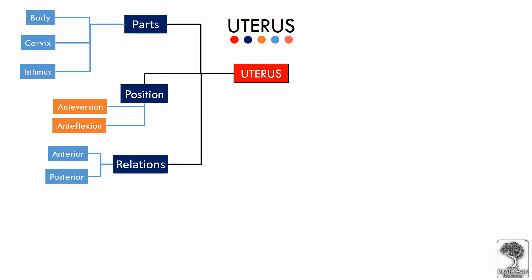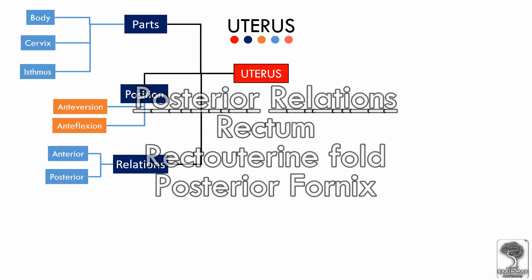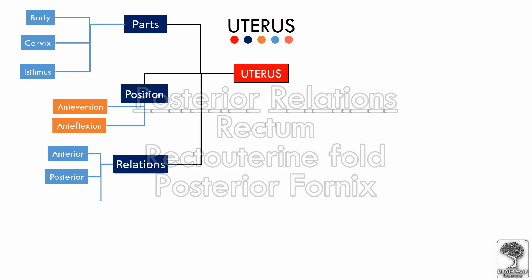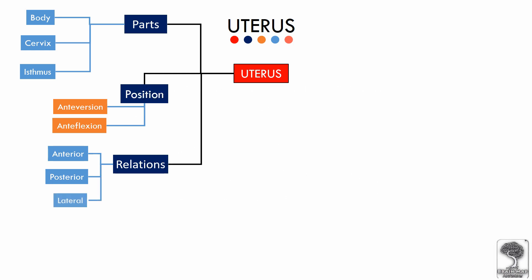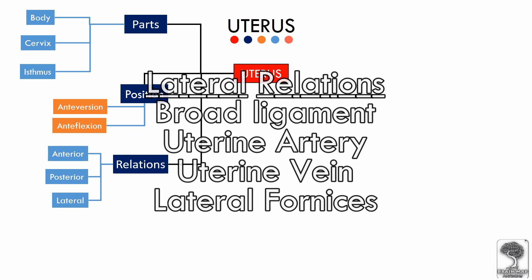Posteriorly, the uterus is related to the recto-uterine fold of peritoneum, rectum, and the posterior fornix of the vagina. The lateral relations of the uterus are the broad ligament, uterine vessels, and the lateral fornices of the vagina.